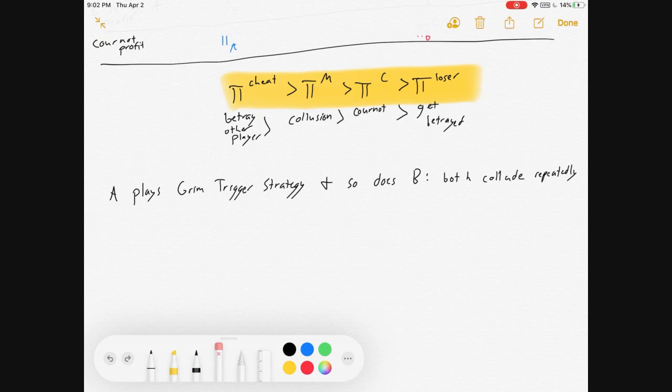So, if they both do their grim trigger strategy, they'll both collude repeatedly. They both start by colluding, and they answer with more colluding. Profit for firm A is equal to collusive profit, plus discounted collusive profit, plus double-discounted collusive profit, plus dot dot dot, is the sum from i equals 1 to infinity of discounted collusive profits.